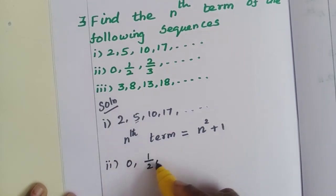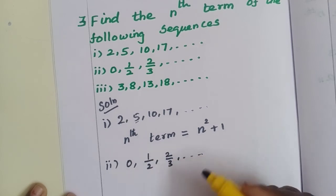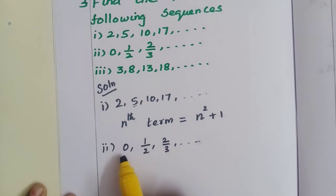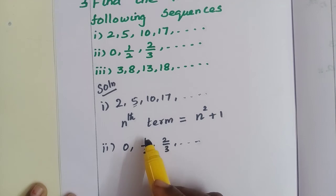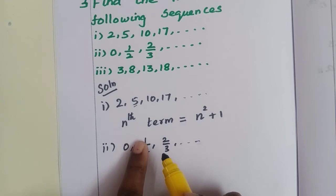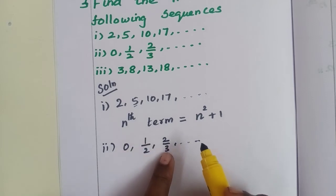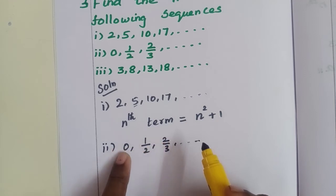Second sequence: 0, 1/2, 2/3. Numerator changes. 2nd place: 1 subtract 1. 3rd place: denominator 3, numerator 2, which is 3 minus 1. 1st place: 1 minus 1 is 0, 0 divided by any number becomes 0.